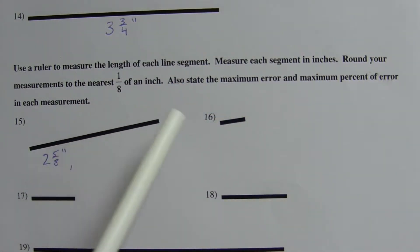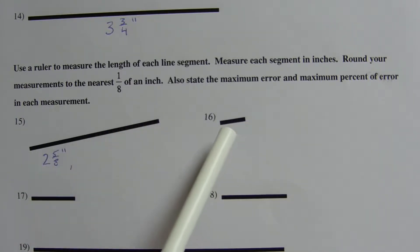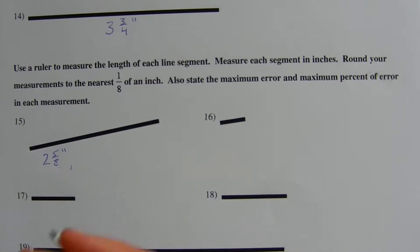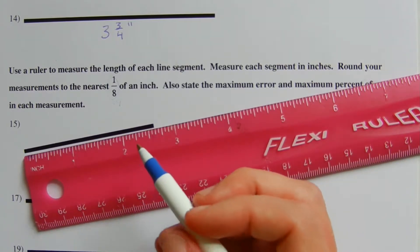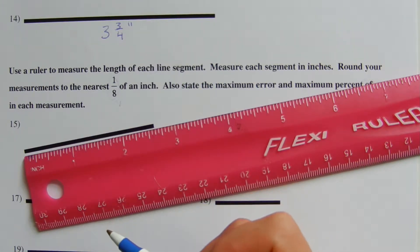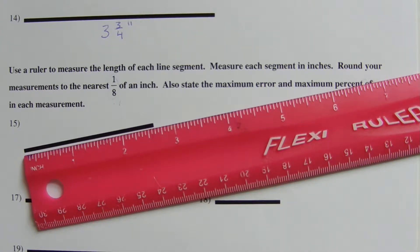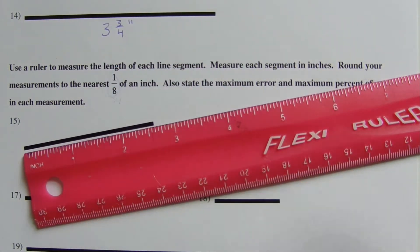Our next step is to state the maximum error. If we're measuring to the nearest eighth of an inch, our maximum error is going to be one sixteenth of an inch. When you're rounding to the nearest whole number, anything from 0.5 you round up, but anything less than 0.5 you round down. So the error for the closest inch would be half an inch, for the closest quarter inch it would be an eighth, and for the nearest eighth of an inch the maximum error is one sixteenth — half of that eighth.